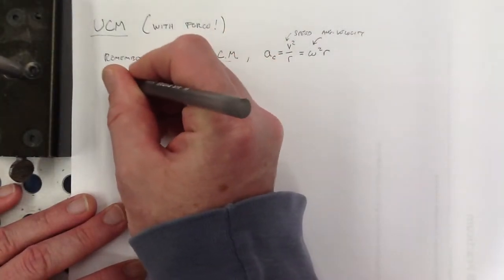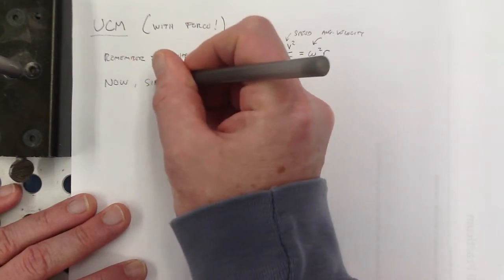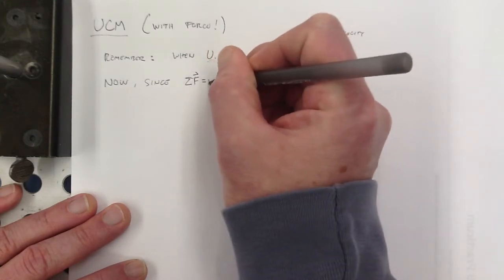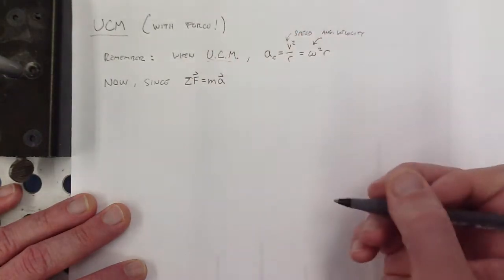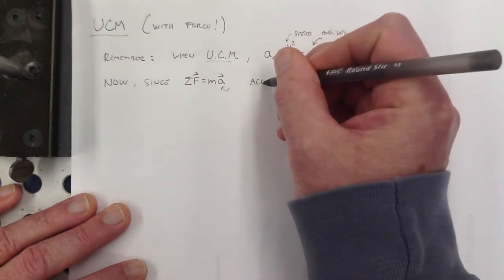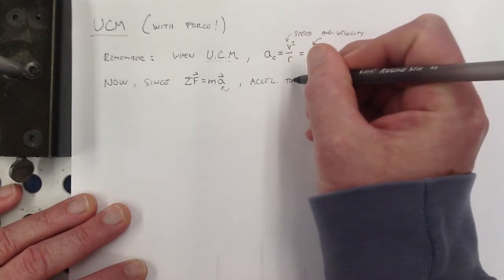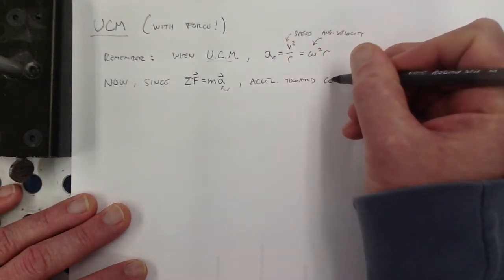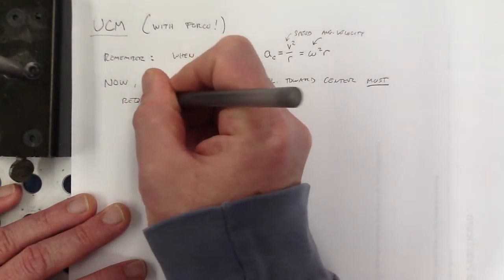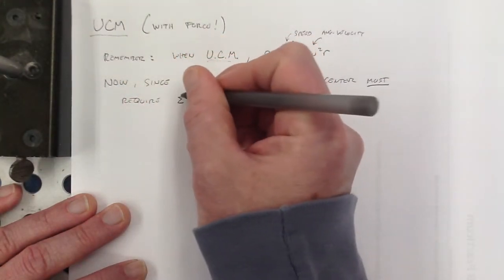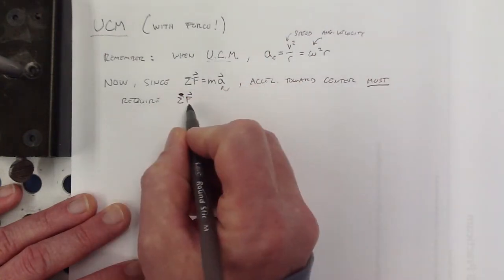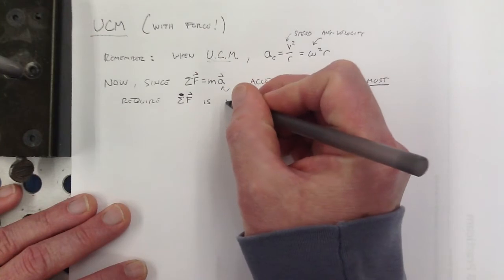Now, since we know that the sum of all forces is equal to mass times acceleration, if that's true, then acceleration toward the center must require unbalanced force. It must require that the sum of all forces is toward the center.